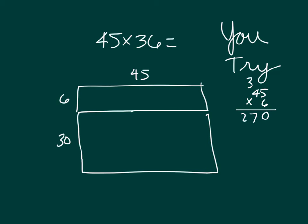Did you get 270 for your first partial product? For the other partial product, I would have 45 times 3 tens. 5, regroup the 1, 13, 135 tens, or the number 1,350.